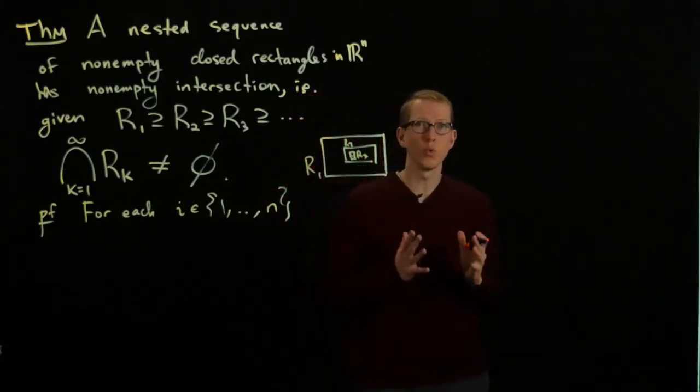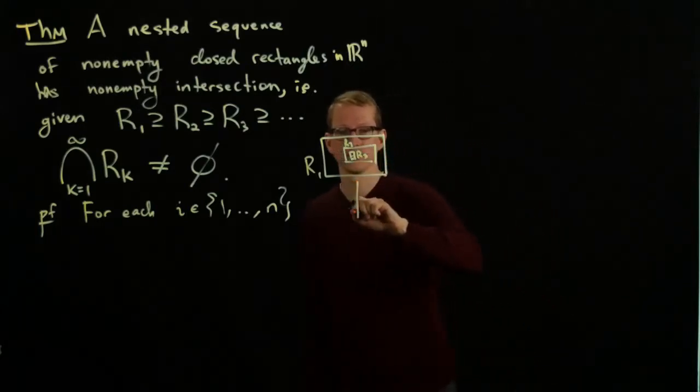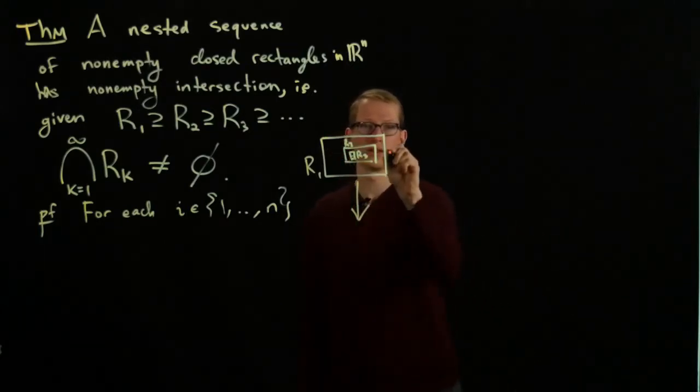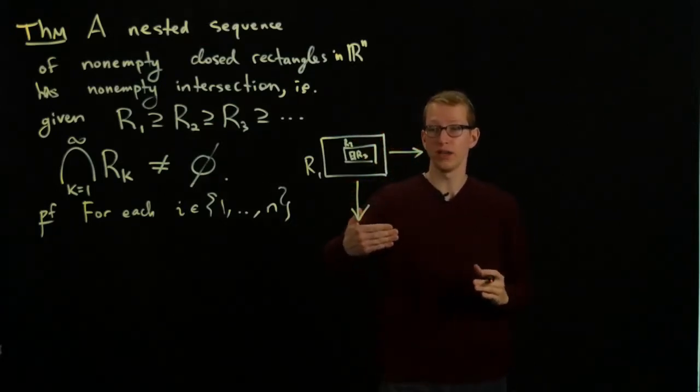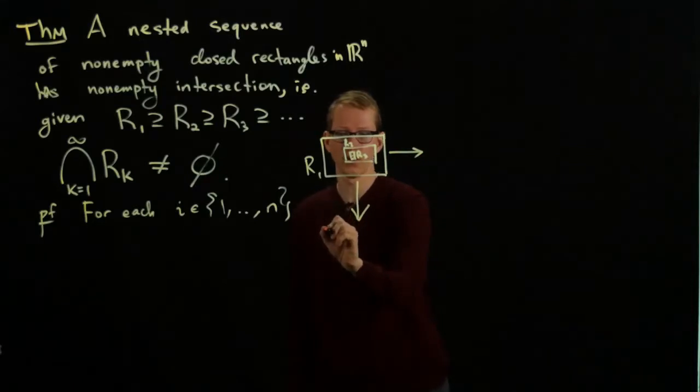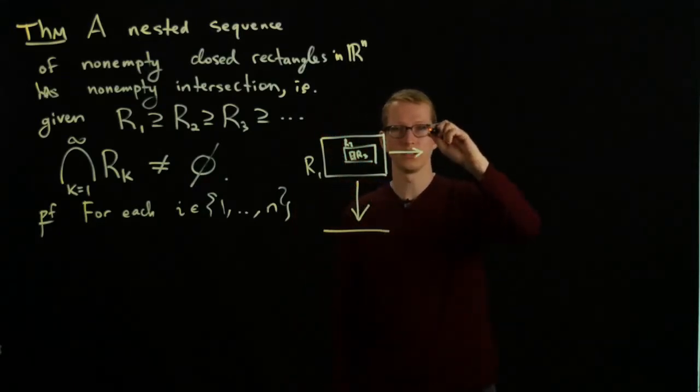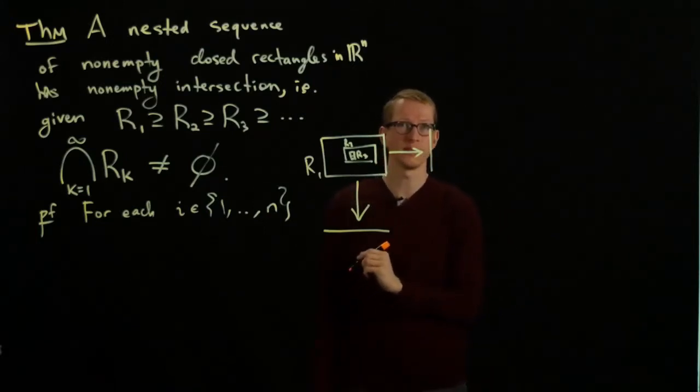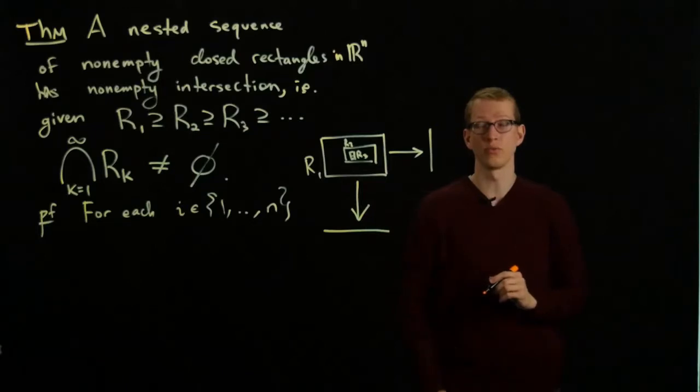For each coordinate, we can take the projection of each of these rectangles, down in this direction and to the right in this direction, and we'll acquire intervals in each direction. For instance, the first interval might look like this, and the first interval in the second direction might look something like this. We can do this for each of the successive rectangles as well.